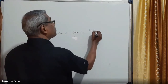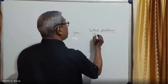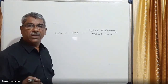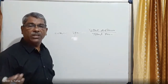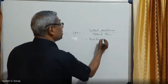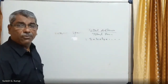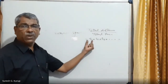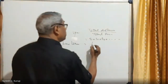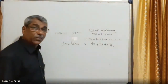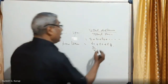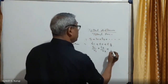Average speed equals total distance divided by total time. Total distance = s1 + s2 + s3 + ... Total time taken = t1 + t2 + t3, where t1 = s1/v1, t2 = s2/v2, and t3 = s3/v3. This is because distance divided by speed equals time taken.